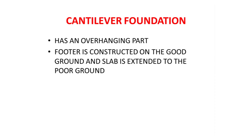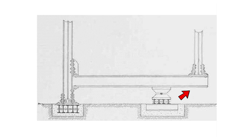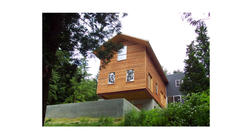The cantilever foundation is supported on one side with a hanging overhanging part on the other side. You use this when you don't have strong ground on one area — you place the foundation where the ground is strong and extend it to create an overhang. You can see a clear example where the whole building is placed with the overhang extending underneath.